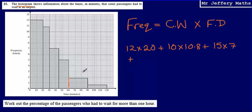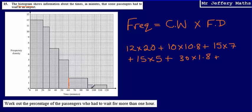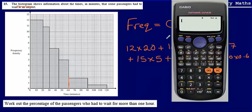Then the next bar is 15 multiplied by 7, plus 15 multiplied by 5. The next bar goes from 60 up to 90, so that's 30 multiplied by 1.8. And the final bar is 30 multiplied by 0.6.